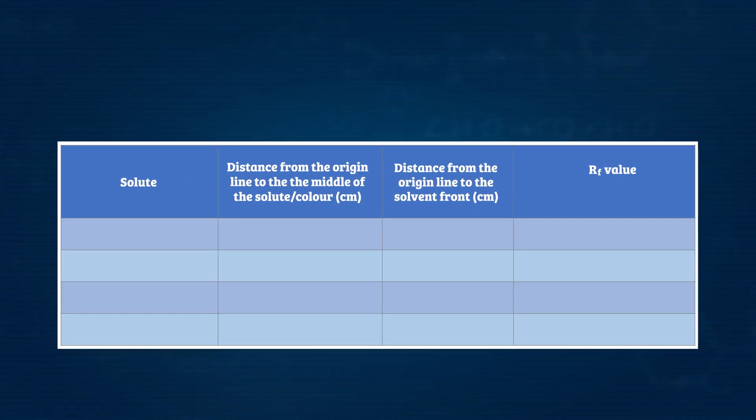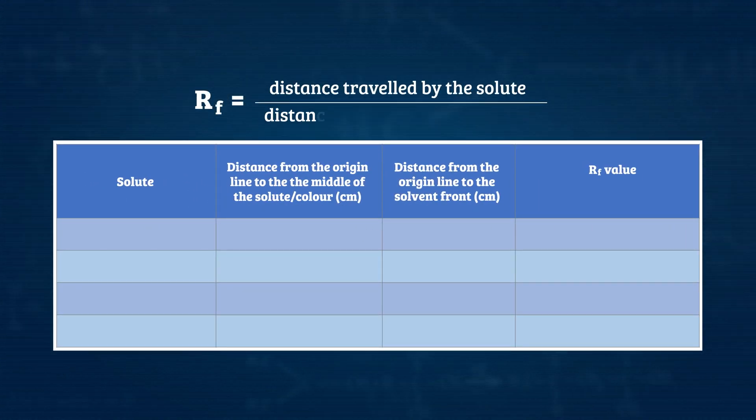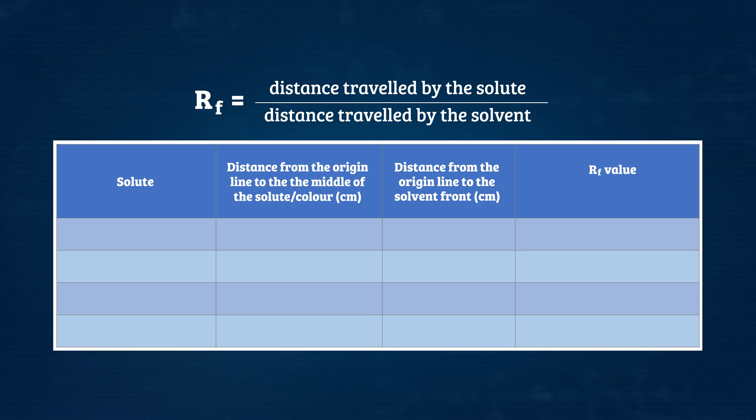Now calculate the RF value, the ratio of solute distance travelled to the solvent distance travelled, for each colour on your chromatogram.